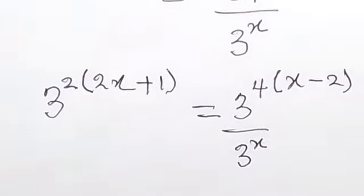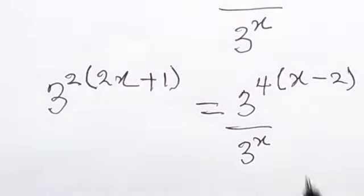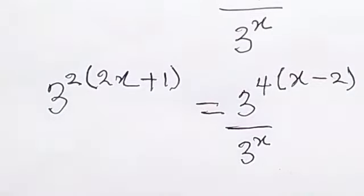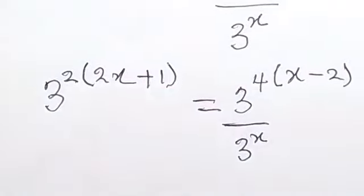Now when we follow the law of indices, this is division. When two numbers of the same base divide each other, we can summarize it and write one base then subtract the index.